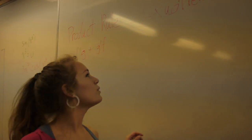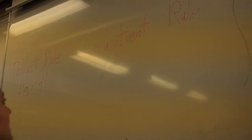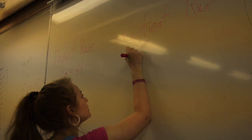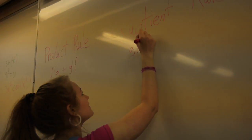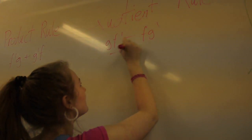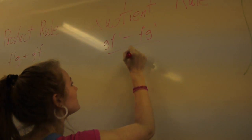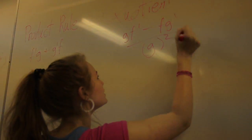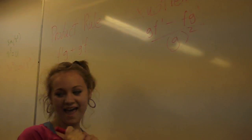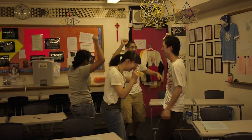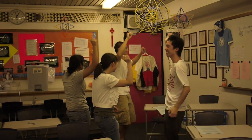Do the quotient rule. This is hard, but it's cool. Low D high minus high D low. I'm so smart that I grow. Tick tock on the clock. I'll set up and let you talk. Yeah.